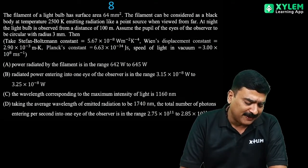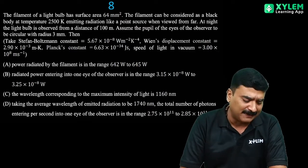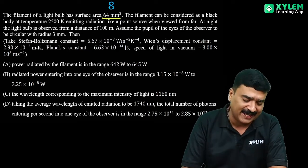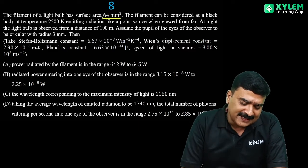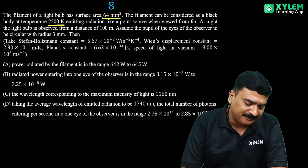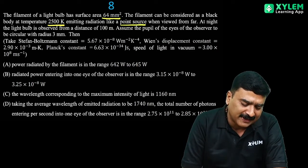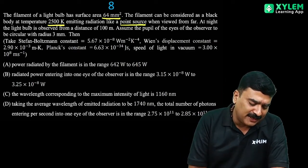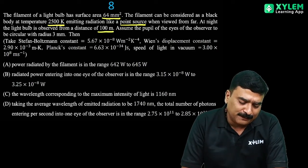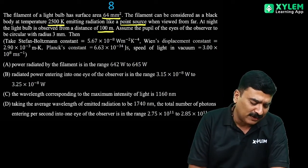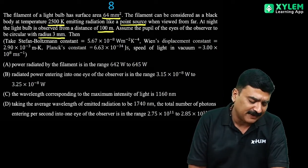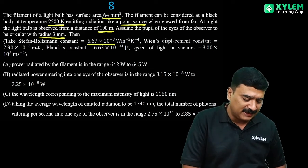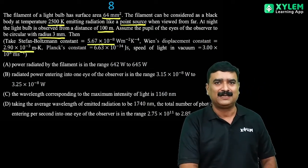The filament of a light bulb has a surface area and can be considered as a black body at temperature 2500 K, emitting radiation like a point source when viewed from far. At night, the light bulb is observed from a distance of 100 m. Assume the pupil of the observer's eye is circular with radius 3 mm. Then, Stefan's constant, Wien's constant, Planck's constant, and the speed of light are given.